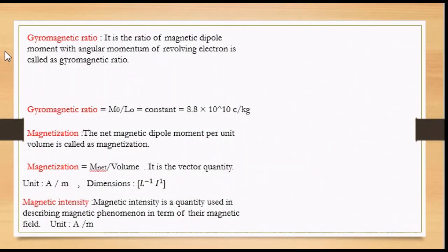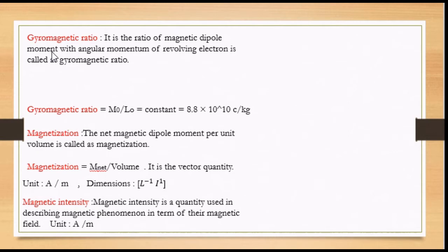Let us see the Gyromagnetic Ratio. The Gyromagnetic Ratio is the ratio of Magnetic Dipole Moment to the Angular Momentum of the revolving electron. It means it is a ratio of M₀ upon L₀, where M₀ is the Magnetic Dipole Moment and L₀ is the angular momentum of the revolving electron. This is a constant value and its value is 8.8 × 10¹⁰ coulomb per kg.